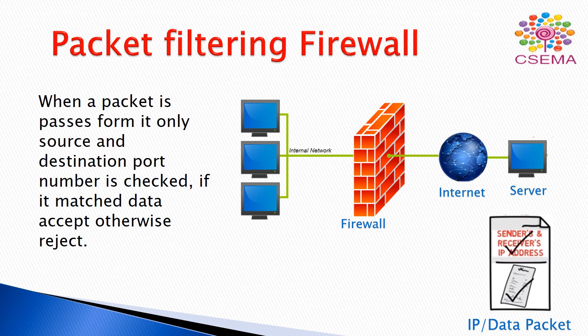Packet filtering only performs checking of the packet's source and destination port numbers. When port numbers match, data is accepted; otherwise it is rejected. It does not check what kind of information or data the payload contains. So sometimes packet filtering firewall doesn't provide better security because the payload might contain malicious or unwanted content.